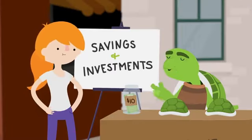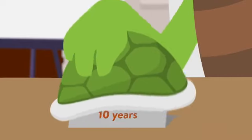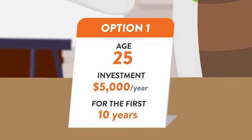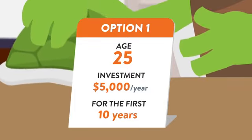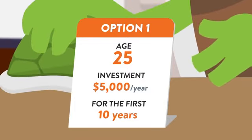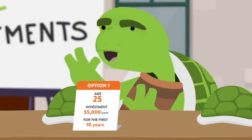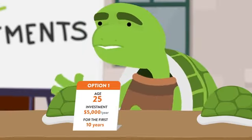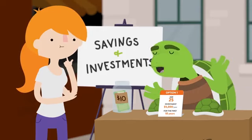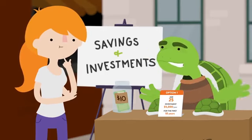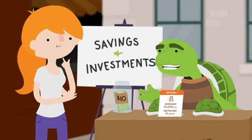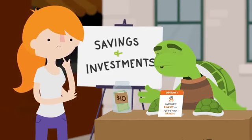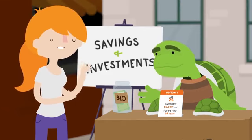Option one: you're 25 years old, and you put away five grand a year until you're 35. Then hands off — you let the investment sit. You don't add any more money to it. And when you're 65, you check to see how much it's worth.